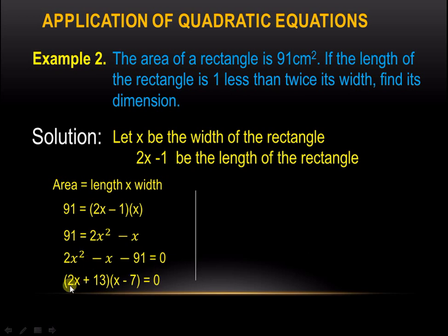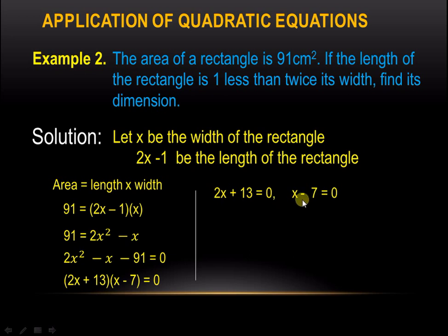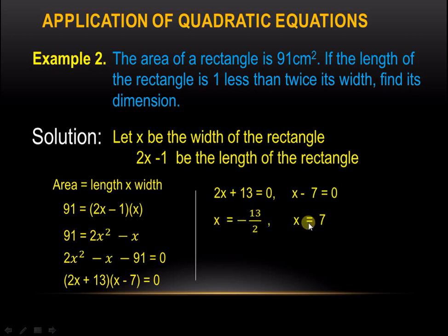Again, we equate each factor to 0, giving us 2x plus 13 equals 0 and x minus 7 equals 0. Solving for x, we get x equals negative 13 over 2 and x equals 7.